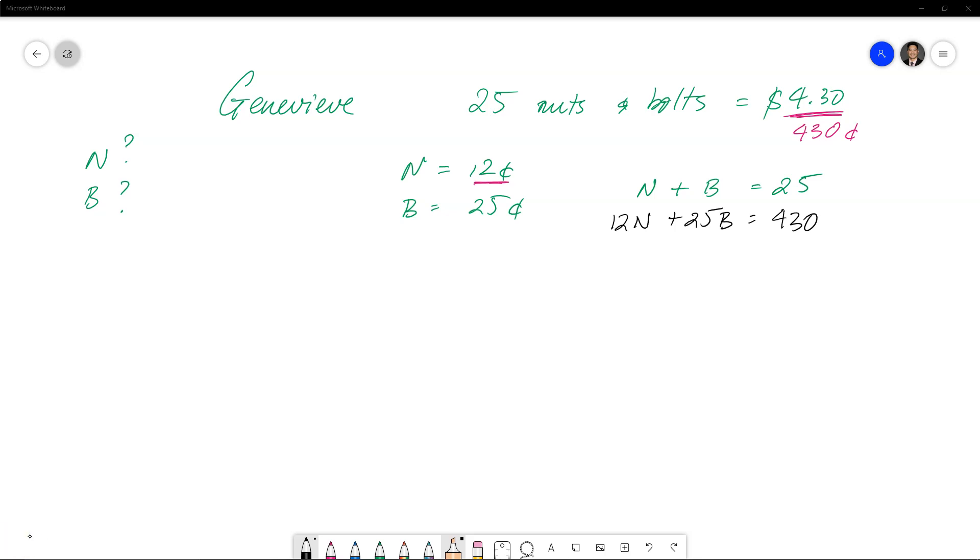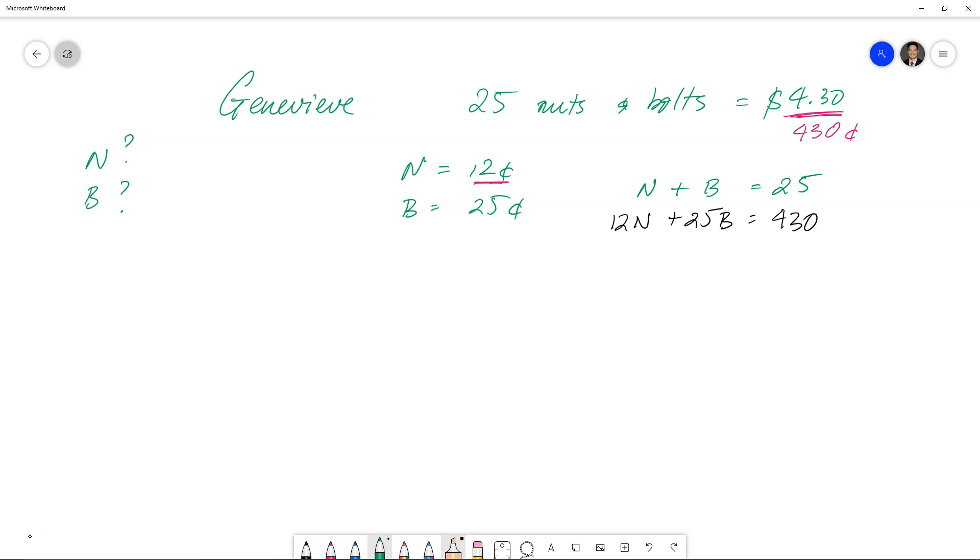And what we can do here, we can actually then use process of substitution. We're going to rephrase this one to N equals 25 minus B. So we're going to substitute that into N and then work out what B equals. So what we'll have is 12 outside of 25 minus B plus 25B is equal to 430.